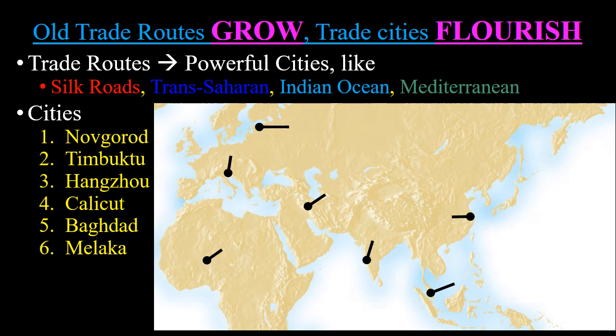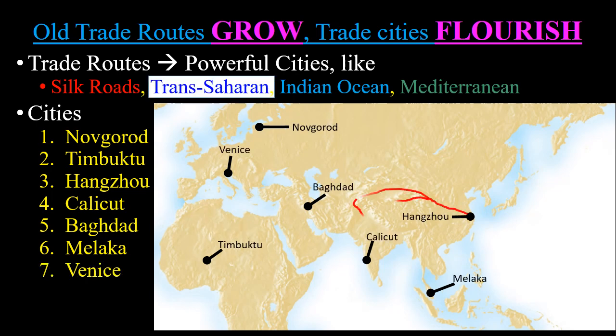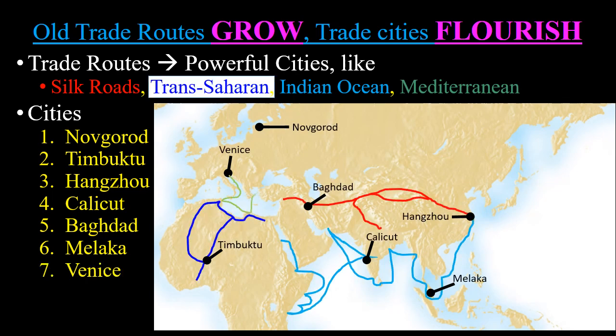Powerful cities will grow up like Novgorod, Timbuktu, Hangzhou, Calicut, Baghdad, and Malacca. The old trade routes that continue are the Silk Road, Trans-Saharan, Indian Ocean, Mediterranean, etc. You can see those trade routes and cities labeled here. You don't need to know every specific thing about them, but you should be able to mention them as economic, political, and cultural centers.